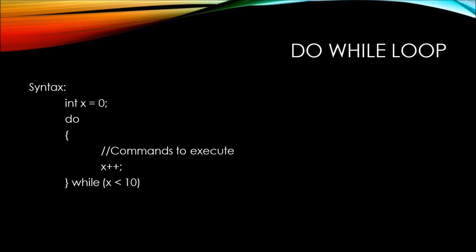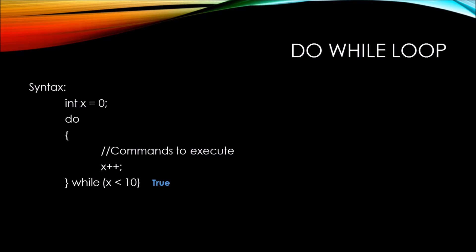Here's the basic execution flow. We start off declaring our variable along with an initial value, then we hit our do loop. First, we execute the code within the do scope, increment the value of x by 1, then we hit the while statement. If the while statement is true, we repeat the commands inside the do scope. If the while expression is false, we continue on with the rest of our code.